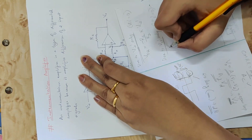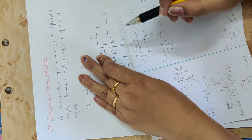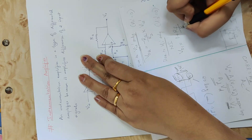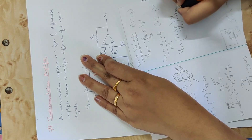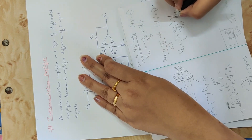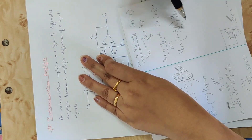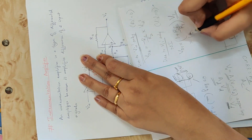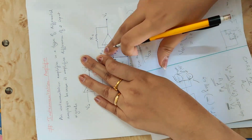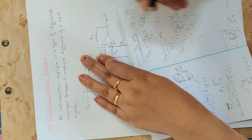This is the non-inverting amplifier case. For the plus input, the other input is ground. The output voltage equation is: 1 plus Rf by R1 into V1, where V1 is the non-inverting terminal voltage. Here Rf is R3 and R1 is R2, so the output due to Vi1' is: 1 plus R3 by R2 into V1.